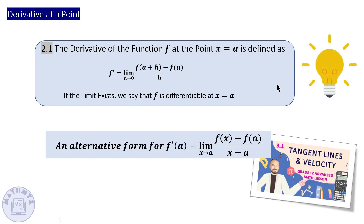Here's an alternative form: basically the slope formula, the limit when x approaches a. You have x as a point near a; as this point approaches a, the slope will be the slope of the tangent line. So the derivative is the slope of the tangent line, written as a limit.